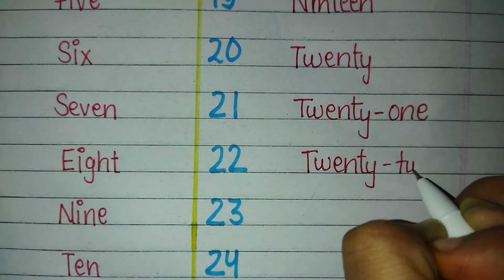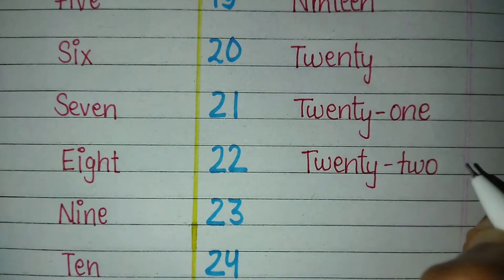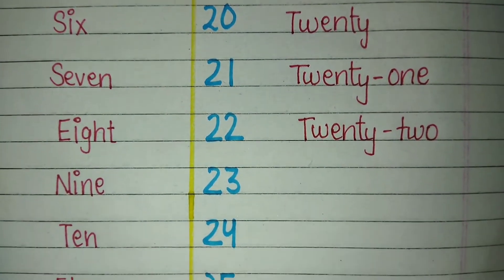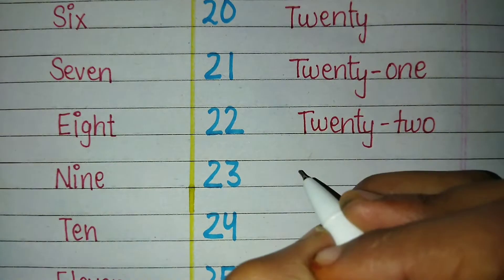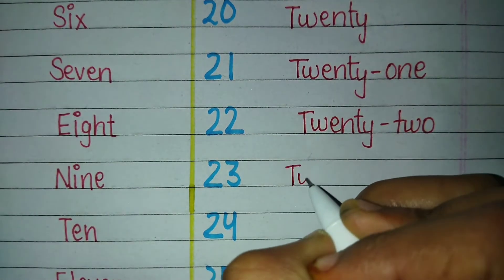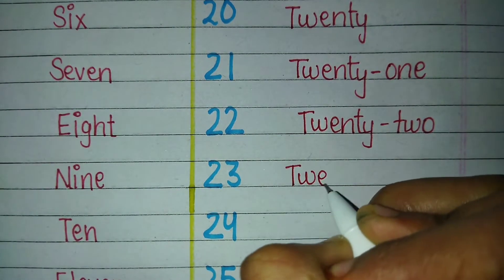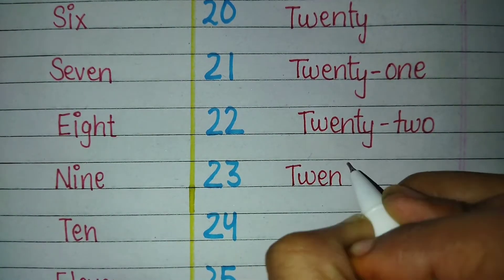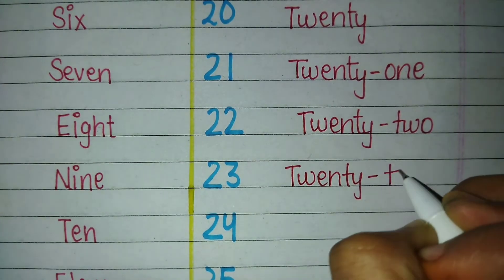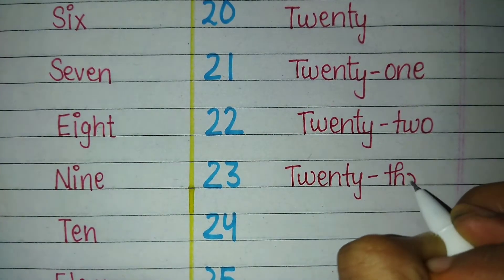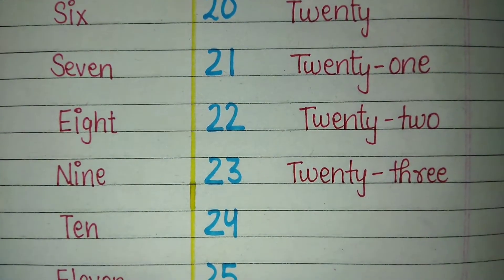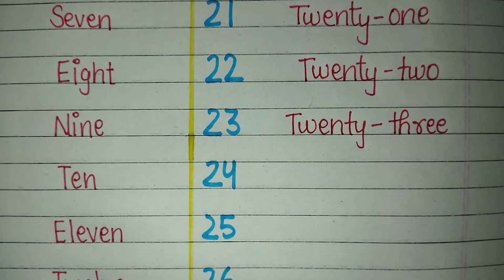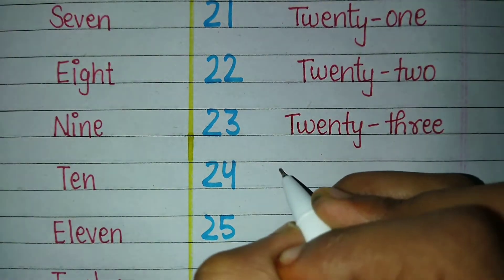Twenty-one — T-W-E-N-T-Y — 20, O-N-E — 1 — 21. Twenty-two — 22. Twenty-three — T-W-E-N-T-Y — 20, T-H-R-E-E — 3 — 23.